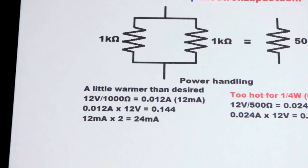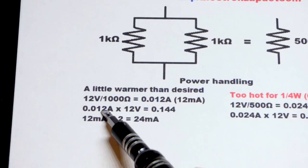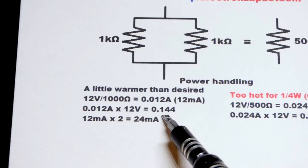So we'll end up with twice the current. Each resistor here will have 12 volts across it and 12 milliamps of current going through it.